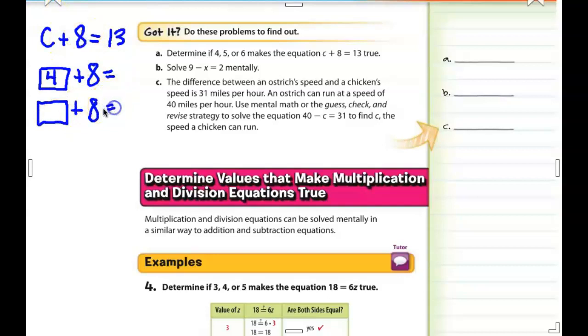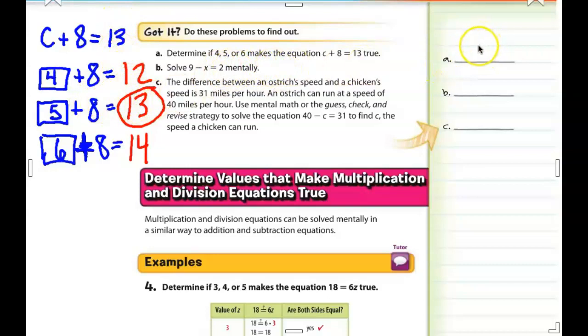So now we're going to plug in the number 5. So I'm going to show you all the three answers all together in just a moment. But if we put the number 5 in here, I want you to go ahead and tell me what is the sum of 5 plus 8. Finally, let's try 6. So C plus 8. Instead of C, we write 6. 6 plus 8. Tell me what that answer is. So the question is asking to determine if 4, 5, or 6 makes the equation C plus 8 equals 13 true. This 5 plus 8 is the only one that's going to be equal to 13. And so the answer for A is C is equal to 5.